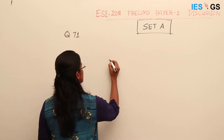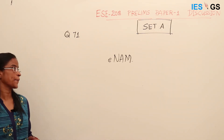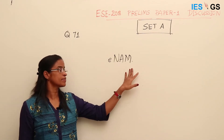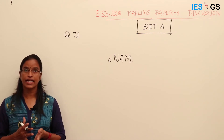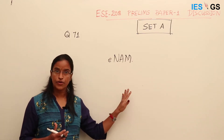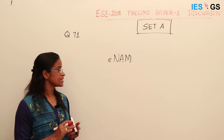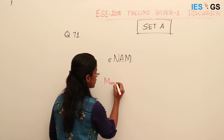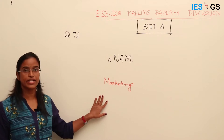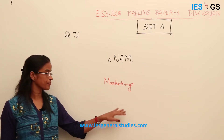Here we are asking about the eNAM Portal, National Agricultural Market. It is one of the applications of ICT, giving nationwide market access to the farmers. Marketing is a factor which affects the income of the farmers because physical access to the market is very limited in rural areas, either because of infrastructural deficiency or because of legal roadblocks.